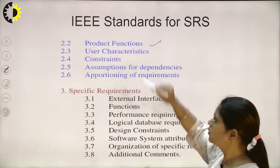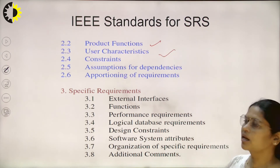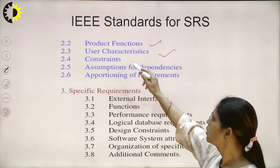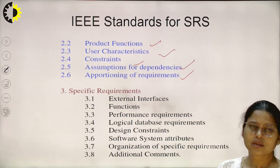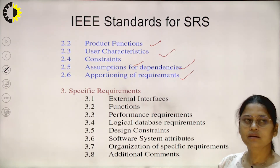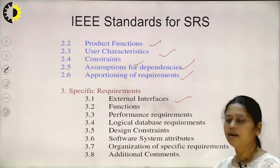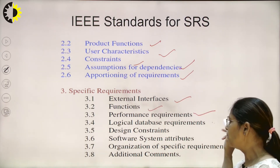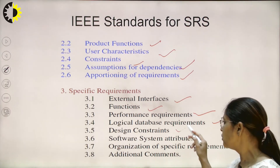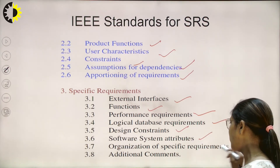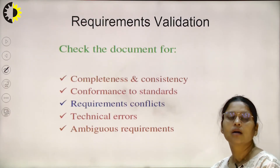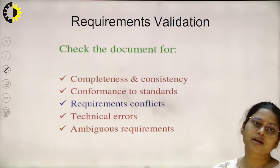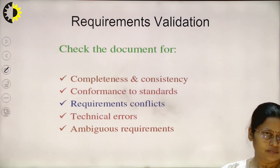We also discuss the product features, user characteristics — how many users are involved in the project — constraints, assumptions, dependencies, and appointing for the requirements. In the specific requirements section, section 3, we define external interfaces, functions, performance requirements, database requirements, design constraints, system attributes, organization of the statement, and additional comments. This is the IEEE standard for preparing the SRS and it is a legal document that is to be signed by the user as well as by the developer of the company.